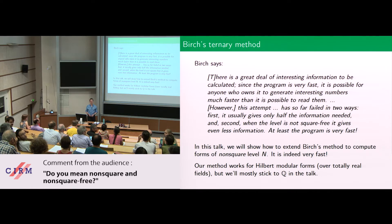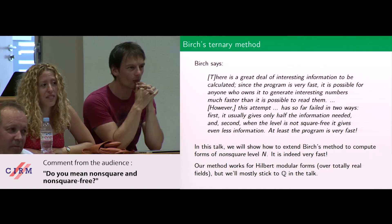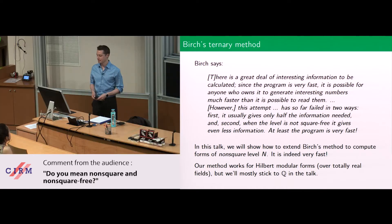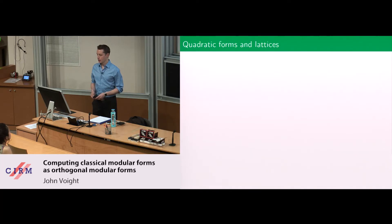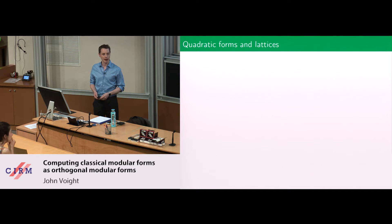So you mean non-square and non-square-free? I mean N is not a square. So like three times five squared is OK. To begin, I need to describe to you the Hecke action on ternary quadratic forms that was introduced by Birch. Let me set up a bit of notation first.